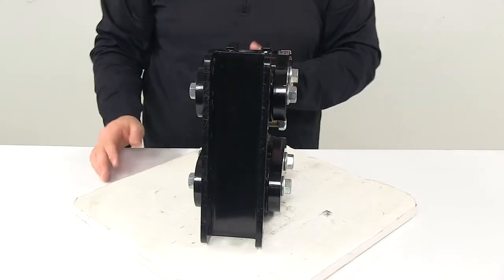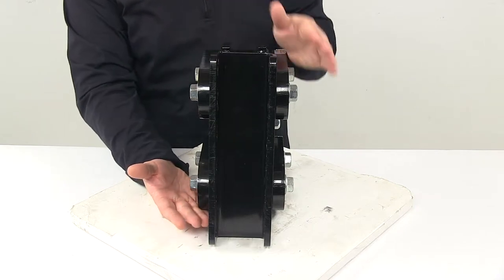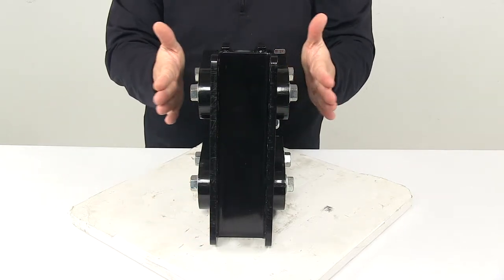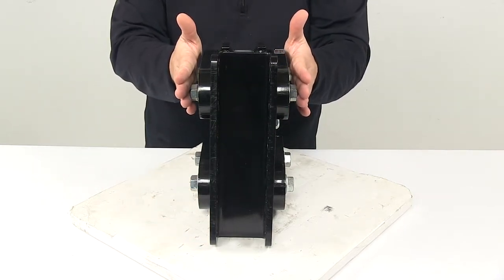When it comes to the overall dimensions, from bottom to top is about 11 1⁄2 inches tall, outer edge to outer edge, bolt head to bolt head is about 6 1⁄8 inches wide.